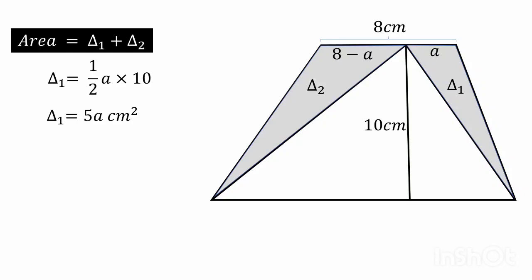So del 2 will be equal to half of 8 minus a multiplied by 10. Simplify this and we will get this.